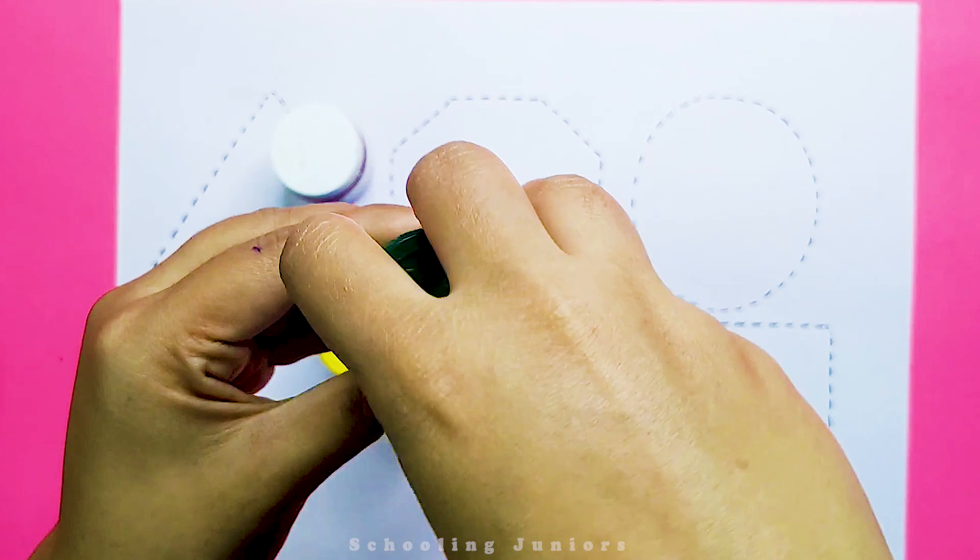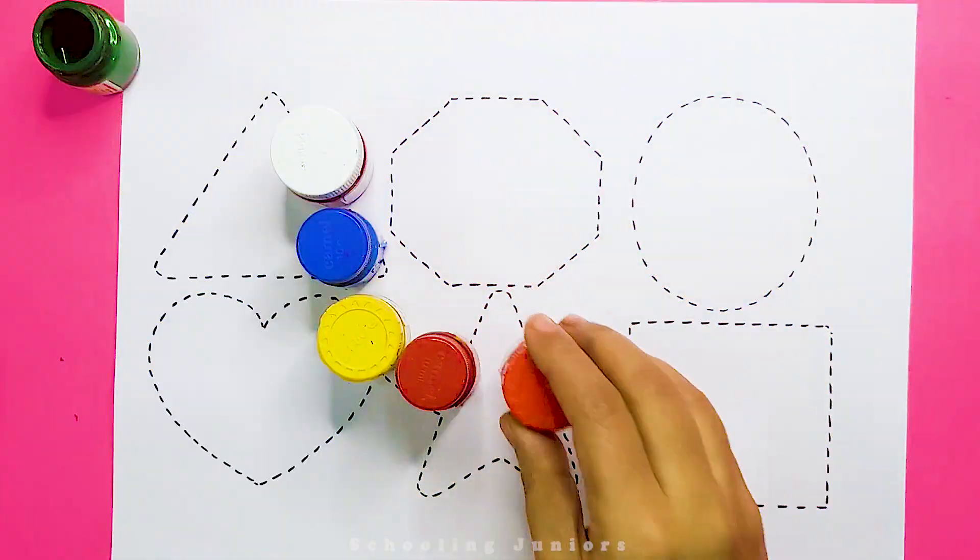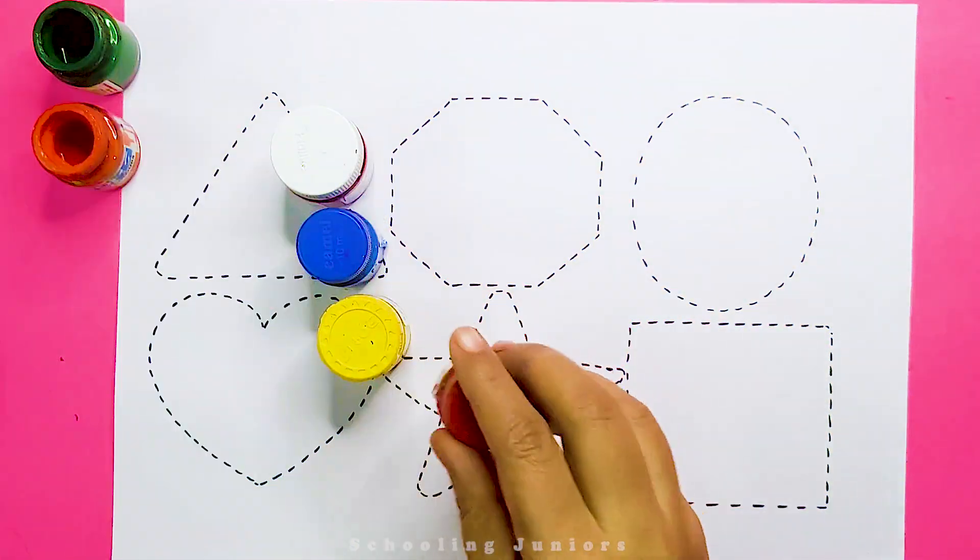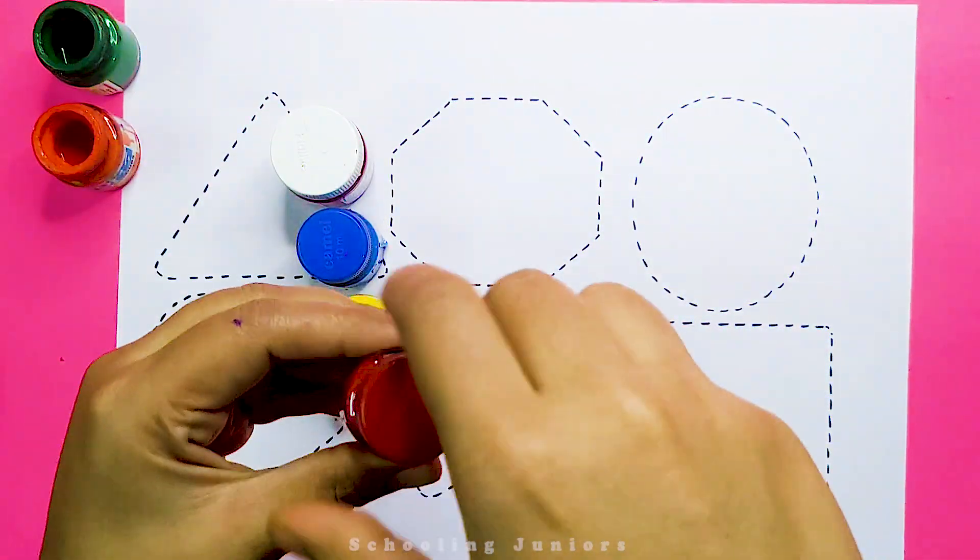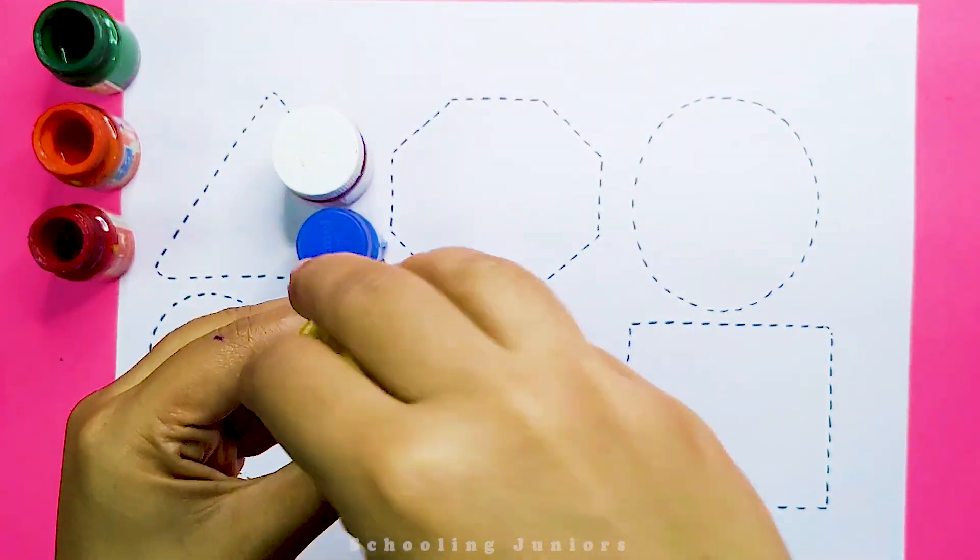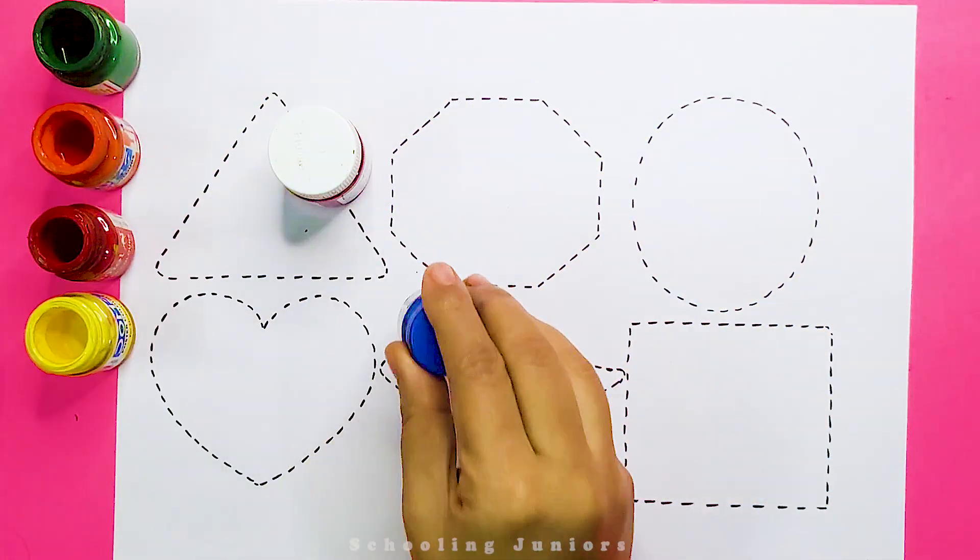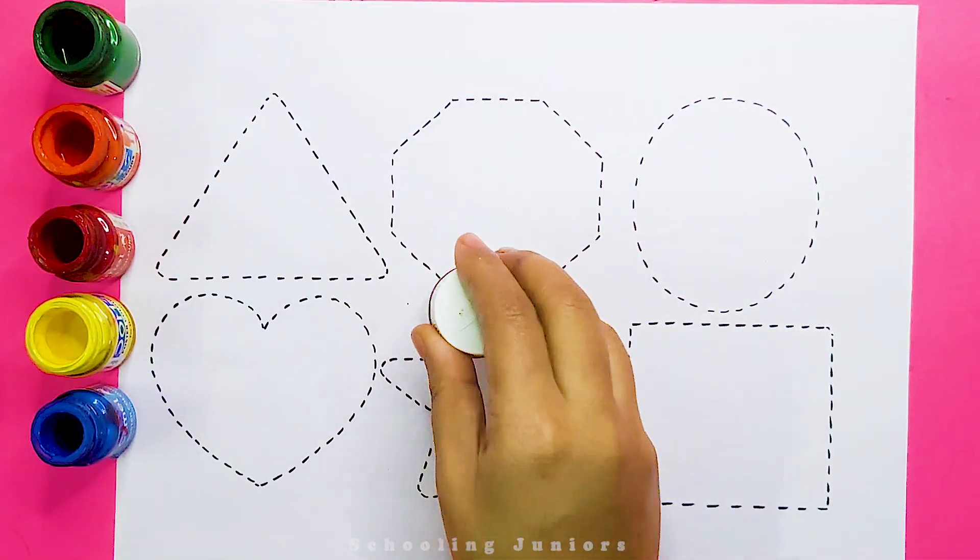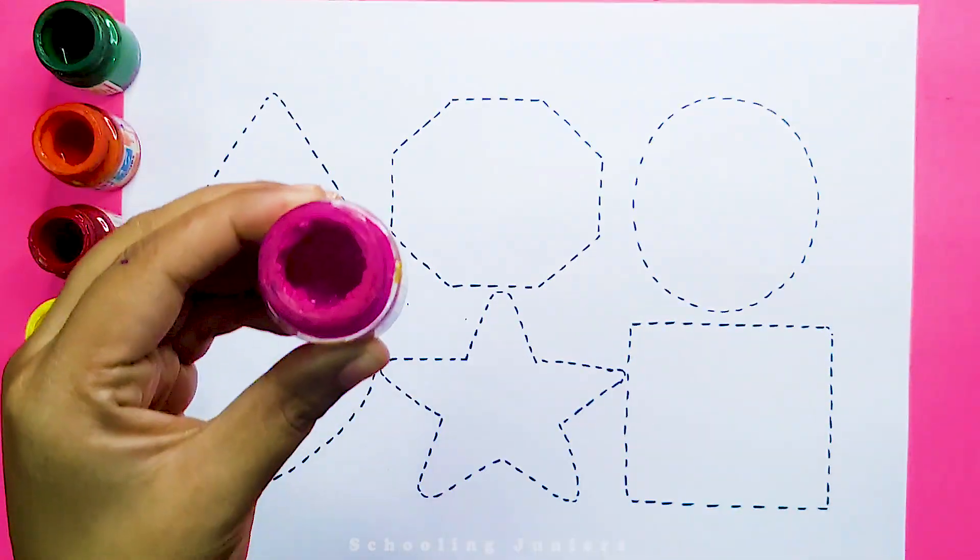This is green color. This is orange color. This is red color. This is yellow color. This is blue color. This is pink color.